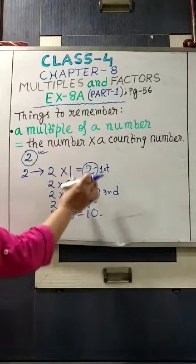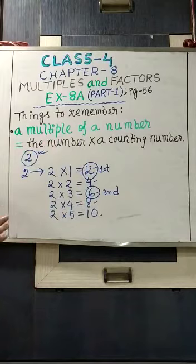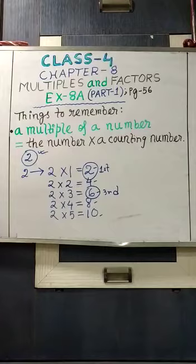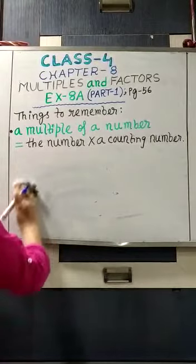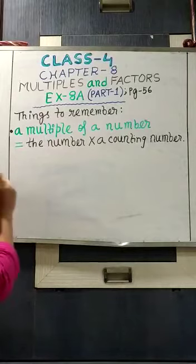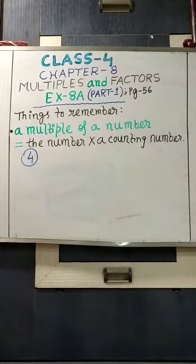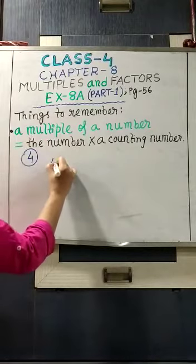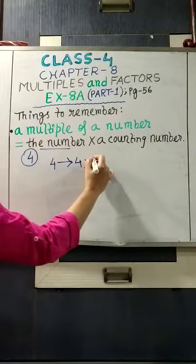In this way you have to find out the multiples of a number. If it is said — the first 6 multiples of 4 — then 4 is the number. So we use: number into counting number. The first counting number is 1.